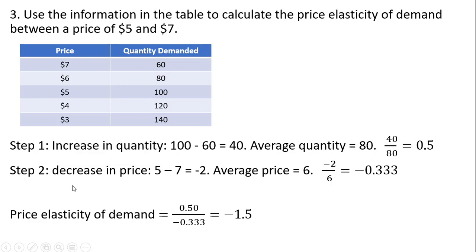In step 2, to get this increase in quantity, price had to fall. So we have minus 2 for the change in price. The average price between $5 and $7 is $6. Dividing minus 2 by 6 gives minus 0.333. Then in step 3, the price elasticity of demand is minus 1.5. This is elastic demand since this coefficient, ignoring the minus sign, exceeds 1.